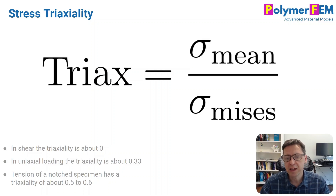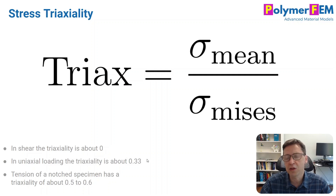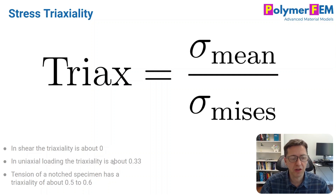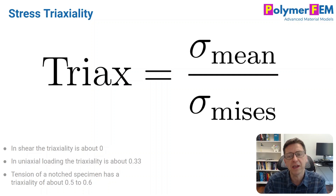It's a scalar number. In uniaxial loading, the mean stress is a third of the applied stress and the Mises stress is the applied stress, so stress triaxiality in uniaxial loading is about 0.33. In shear, there is no mean stress at small strain, so therefore there is zero stress triaxiality. In biaxial loading, it's about 0.66. If you have a notch specimen, something like that. So that's a good way to quantify the nature of the stress field, and that's what's often used in the automotive industry.